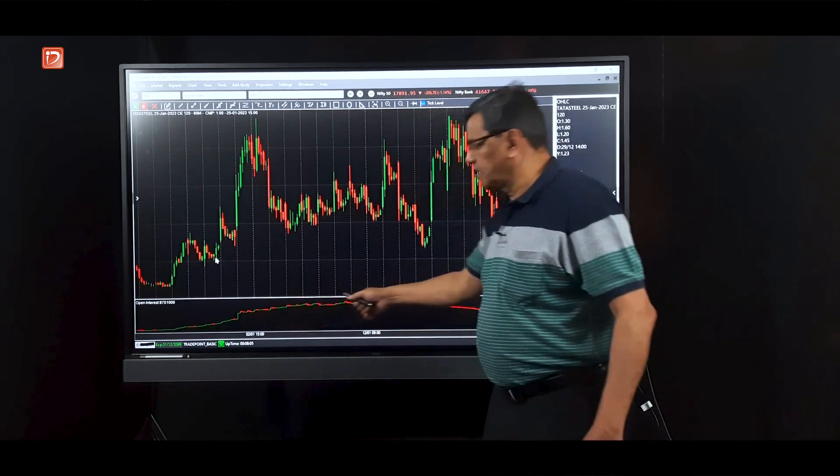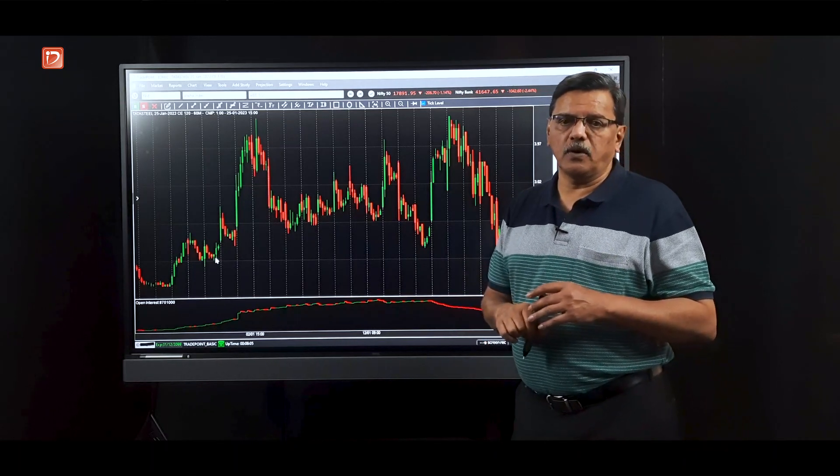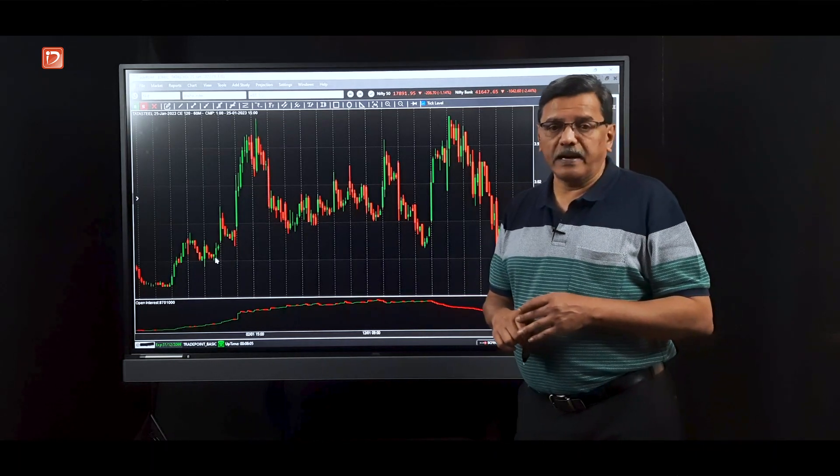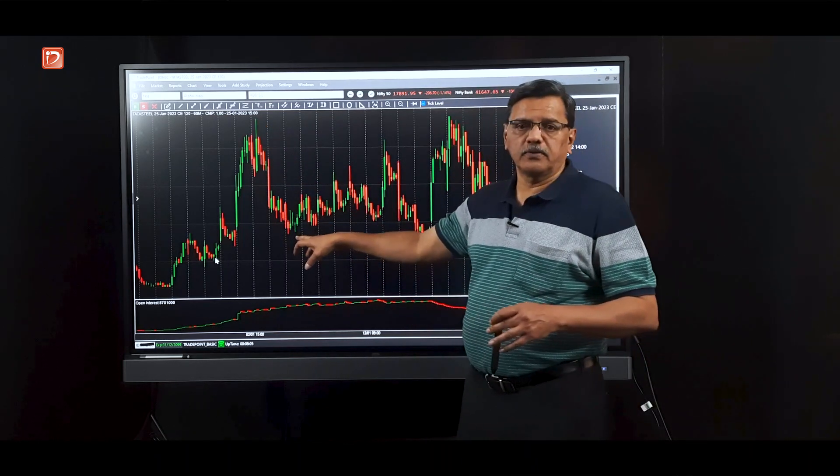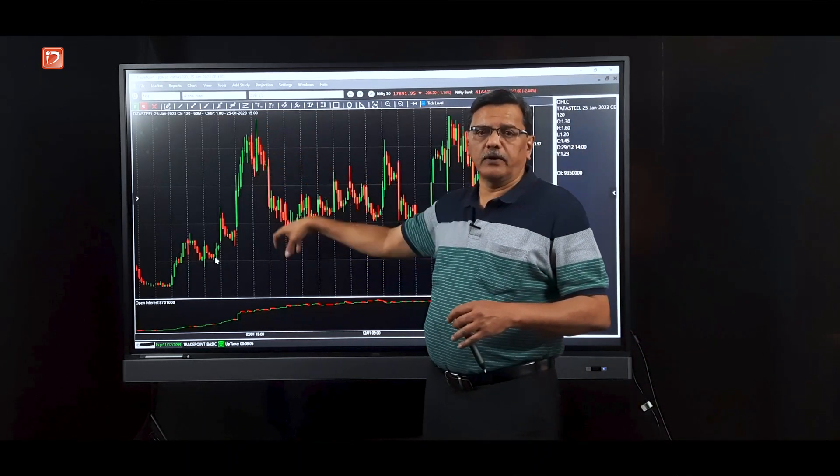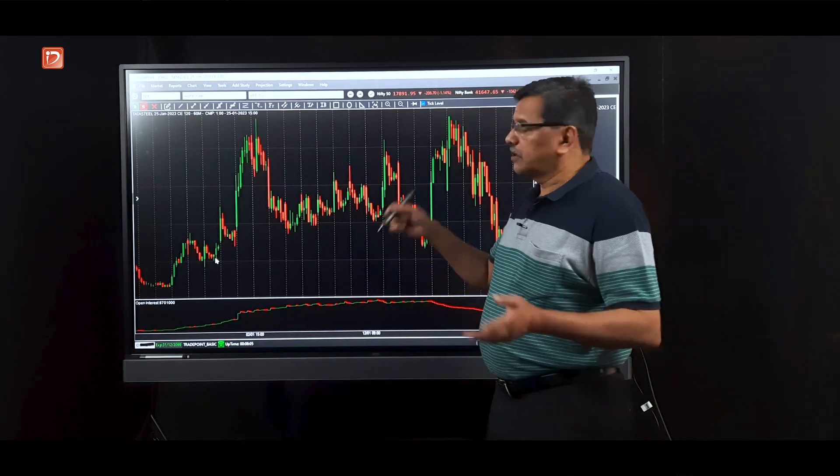It went all the way to about four-five and that is where the 120 call open interest, look at the call open interest, this is still rising, and that is where the crowded bus was spotted because 120 call OI was almost five times out of 120 put. And it then started coming down, so that is when the stock corrected from 120 to 115. And at 115, the put writer was strong, so the stock stabilized.